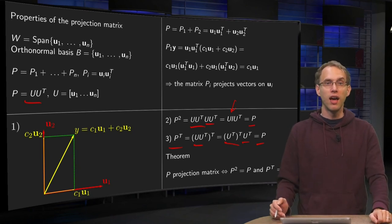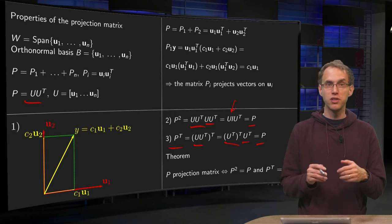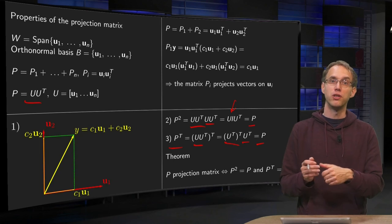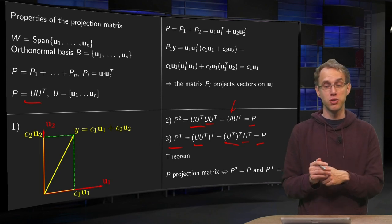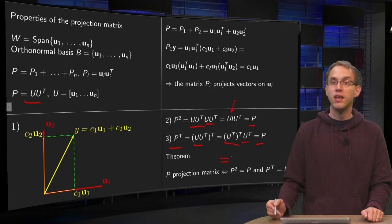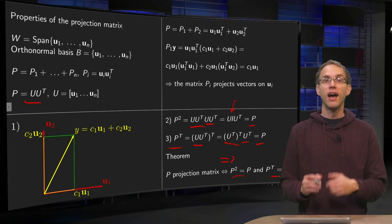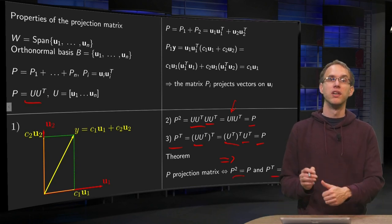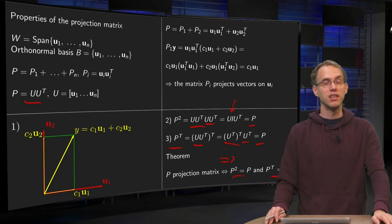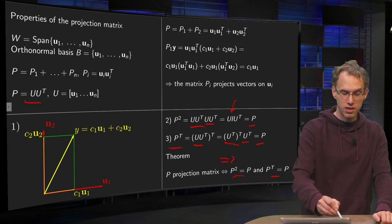Even better, we have a theorem that tells us: if P squared equals P and P transpose equals P, then we know that P is a projection matrix. This also holds vice versa. If you have a projection matrix, then these two properties hold. And if these two properties hold, then P is a projection matrix. Those are in fact equivalent. That's a nice advantage of writing your P in the second way.